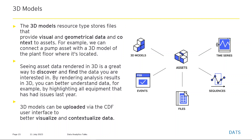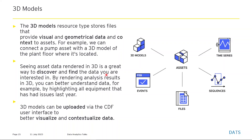The 3D model resource type stores files that provide visual and geometrical data and context to assets. For example, we can connect a pump asset with a 3D model of the plant floor where it is located. Seeing asset data rendered in 3D is a great way to discover and find the data you're interested in. By rendering analysis results in 3D — such as highlighting all equipment that had issues last year — you can better understand your data. 3D models can be uploaded via the CDF user interface.